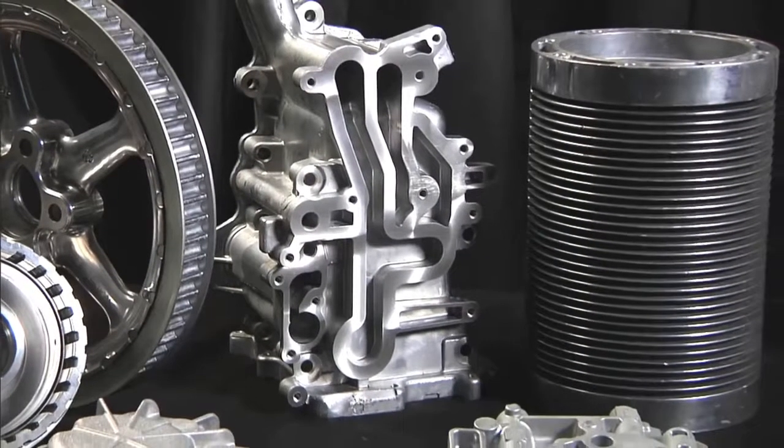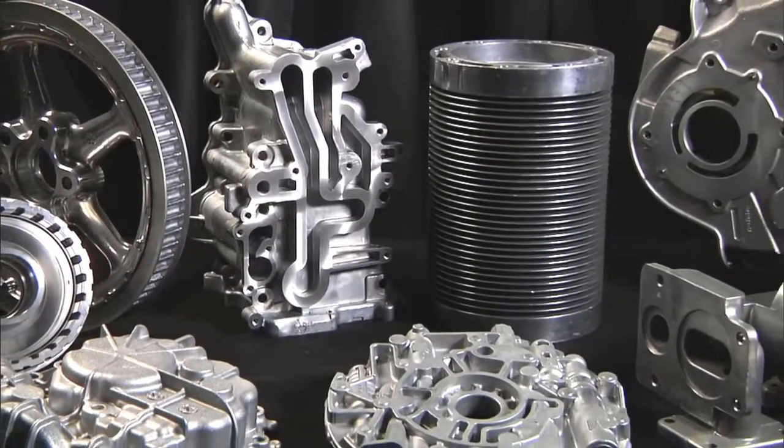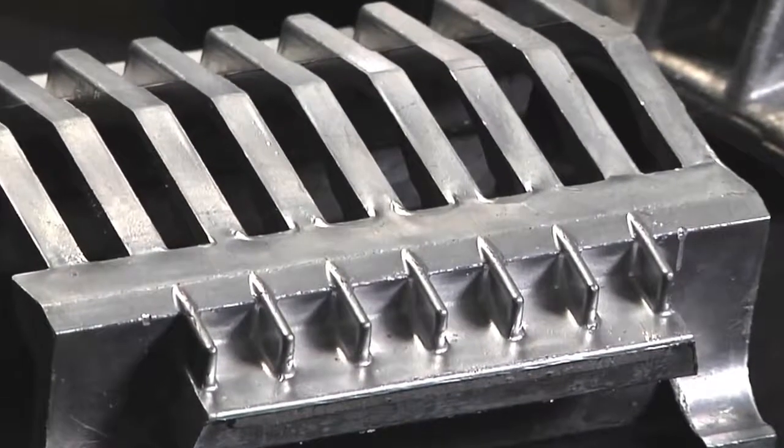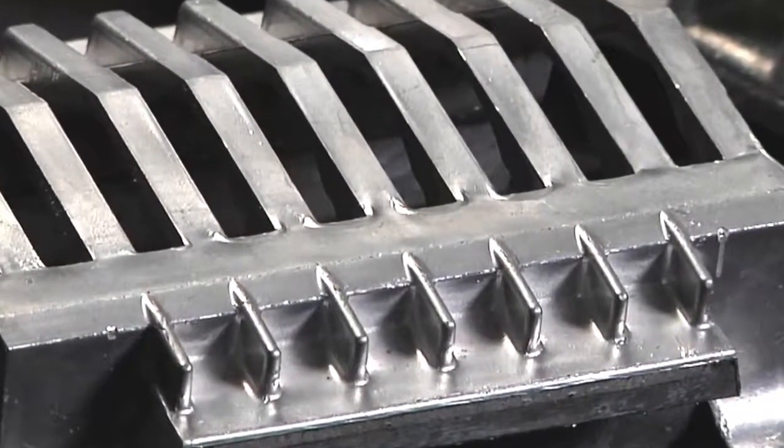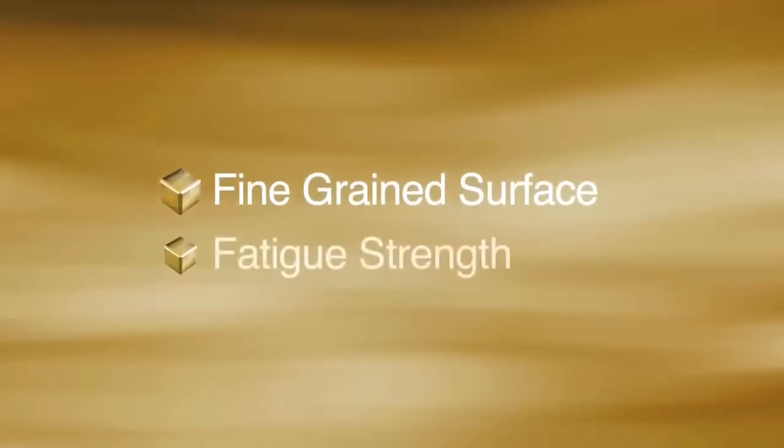Die cast parts can be sharply defined with smooth or textured surfaces and are suitable for a wide variety of finishes. This high pressure process produces a dense, fine-grained surface structure with a wide range of physical and mechanical properties, such as fatigue strength.